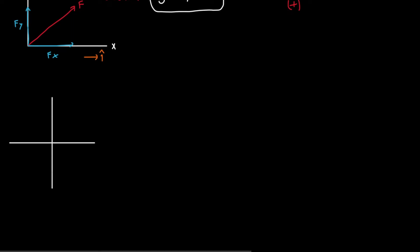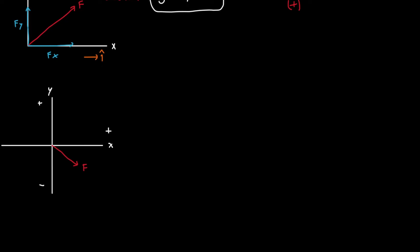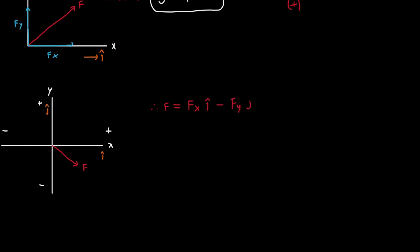Now let's consider a different case where there is a downward diagonal force. The force is in the direction of positive x but negative y. So if we write the Cartesian form of this force F, it will be Fx i-hat minus Fy j-hat. This shows why it's important to account for the direction of the force — Fy here clearly points in the negative y direction.